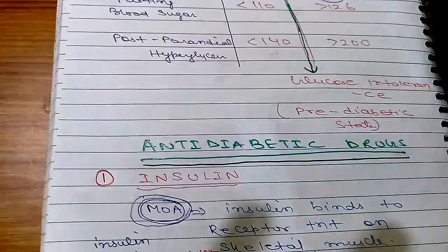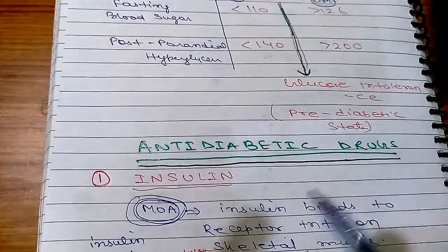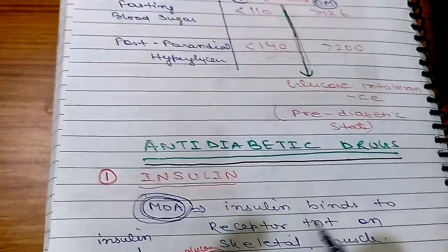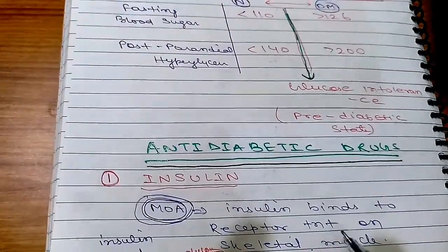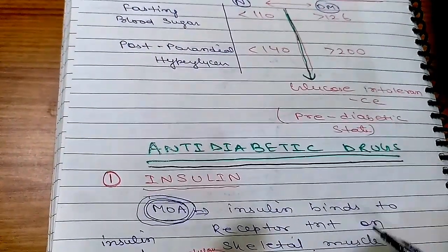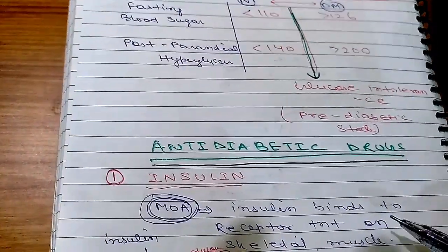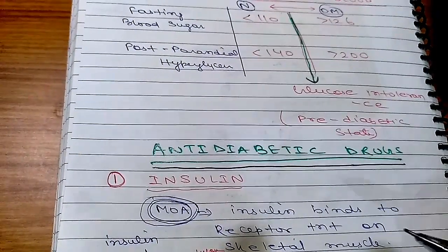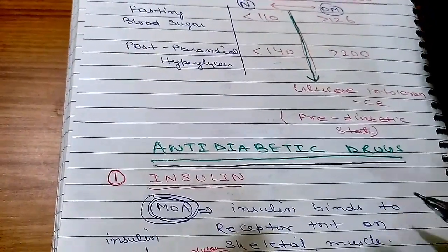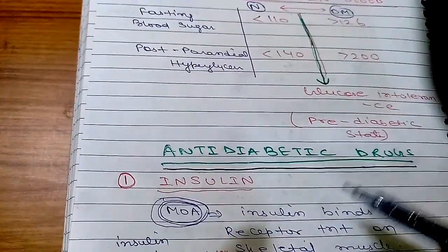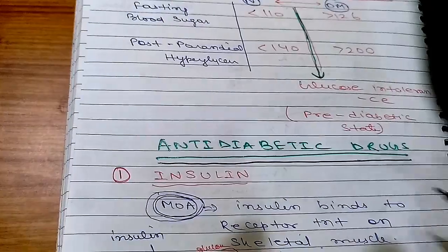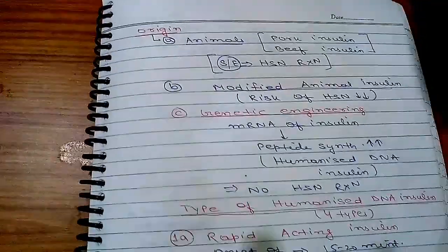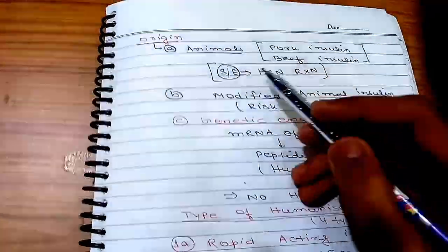Regarding anti-diabetic drugs, first we discuss insulin. Mechanism of action: insulin binds to receptors present on skeletal muscle, causing activation of MAP kinase, which causes translocation of channels responsible for uptake of glucose from the plasma.